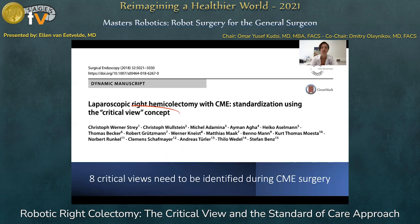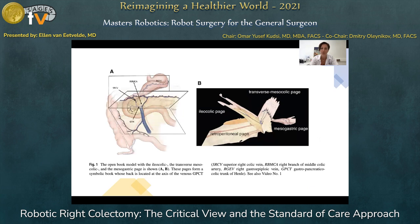Using the critical view concept — this was a paper written by Stefan Benz and a big German team where they identified eight critical views during CME surgery. It is based on the principle of a book with different pages: we have a retroperitoneal page, an ileocolic page, a transverse mesocolic page, and a mesogastric page, and all the different pages should be identified and separated one from another.